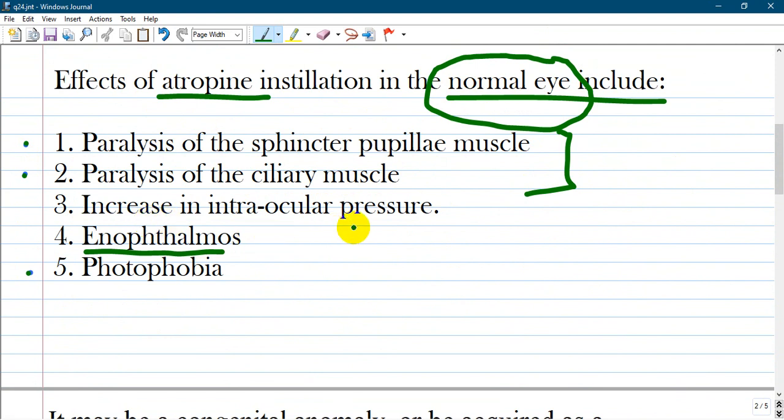How about increased intraocular pressure and enophthalmos? They are false. Intraocular pressure is increased by atropine administration just in case of glaucoma. Normally it doesn't affect intraocular pressure.